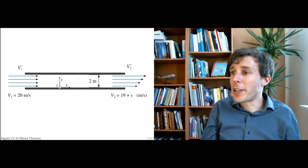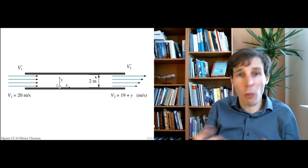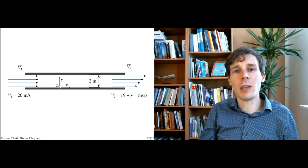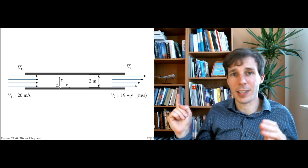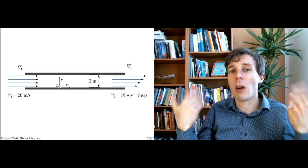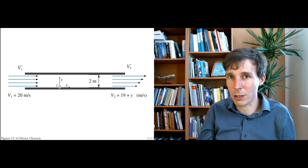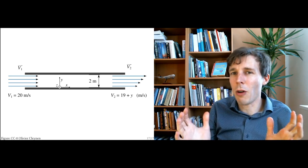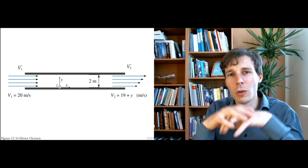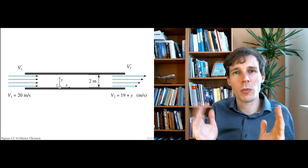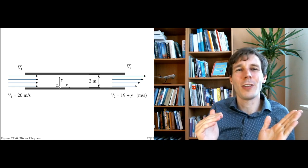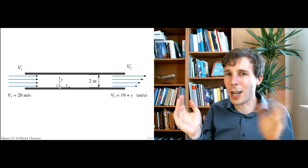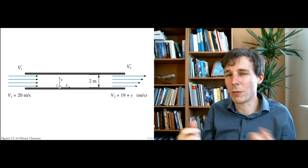Where is this force coming from? It could be a machine or a moving propeller hidden inside the pipe. But if there is no propeller, it would typically be pressure — a higher pressure at the inlet than at the outlet — causing the change in velocity distribution. The integral analysis does not tell us what is happening inside: it just quantifies the net effect of pressure and shear forces combined.